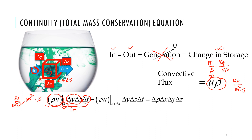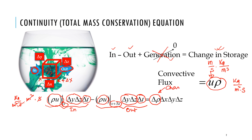In the same way, the amount leaving — the out term — is rho times u evaluated at location x plus delta x, which is the right edge of the control volume, times the same area and same time. So that is my out term, and in minus out equals change in storage. The only way it can store more, since it's the total quantity, is if the density changes. This is my change in density, and density is mass per unit volume, so we multiply by the volume of the control volume.